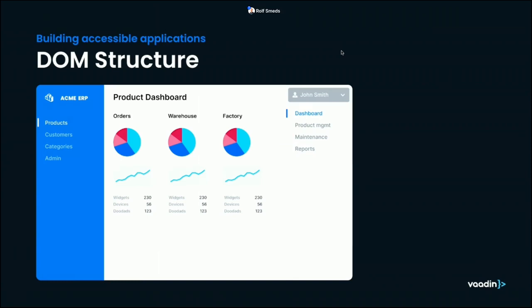First, I want to talk about the DOM structure — DOM stands for Document Object Model. Put simply, the DOM structure is the rendered HTML structure that is generated in the browser. The DOM structure is very essential for screen reader support, because a screen reader isn't a human — it's a program that can't see and understand the UI visually, so instead it just parses the HTML of the page.